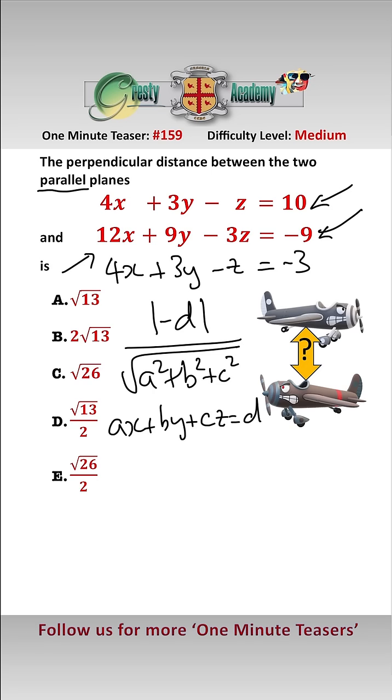As these two planes are parallel on opposite sides of the origin, because these two numbers here are of opposite signs, we add the two perpendicular distances.